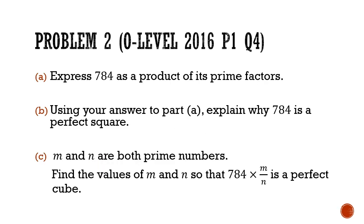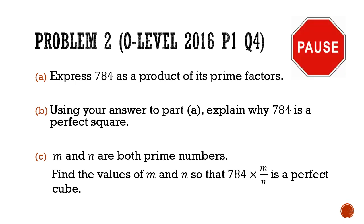Let's look at problem 2, an O-level question from 2016, paper 1, question 4. Part A: express 784 as a product of its prime factors. Part B: using your answer to part A, explain why 784 is a perfect square. Part C: given that m and n are both prime numbers, find the values of m and n such that 784 times m over n is a perfect cube. Pause the video and give this a good try.